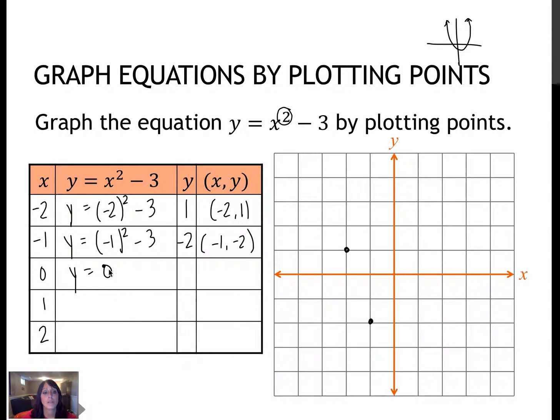Plugging in 0 gives me, of course, negative 3. So 0, negative 3. Plugging in 1, I get 1 squared minus 3. 1 squared is 1, minus 3 is negative 2.